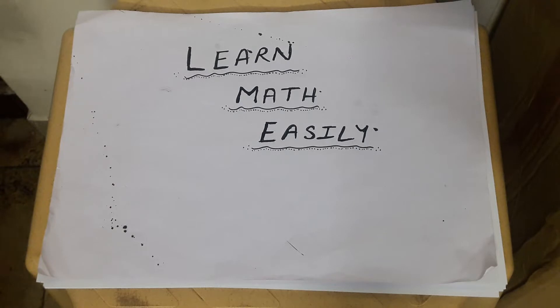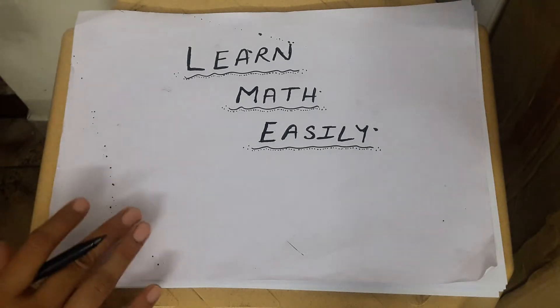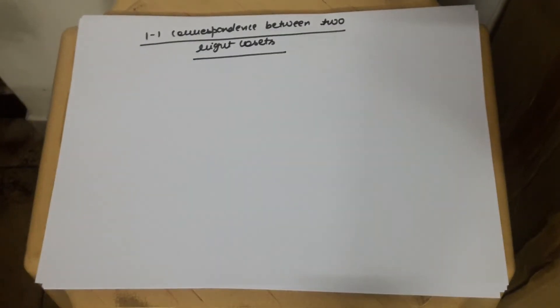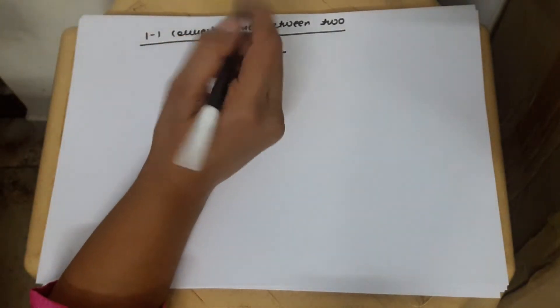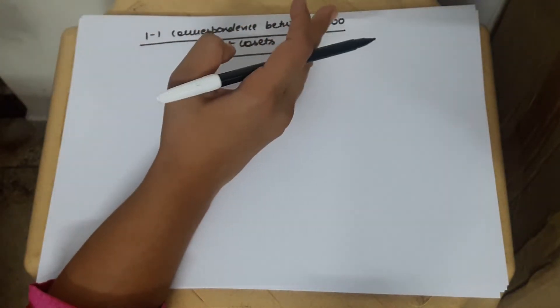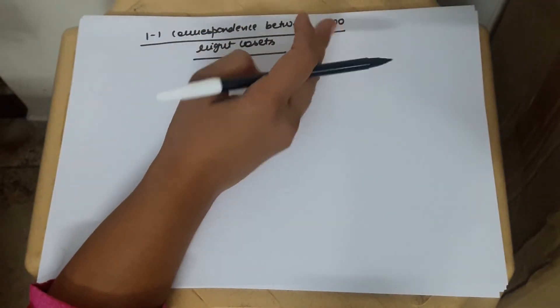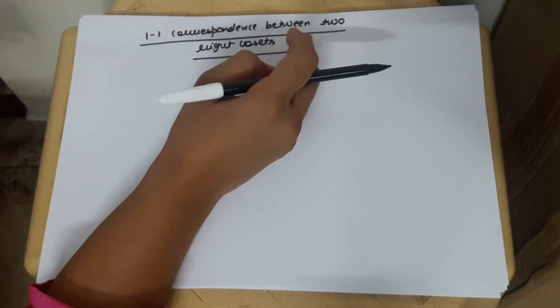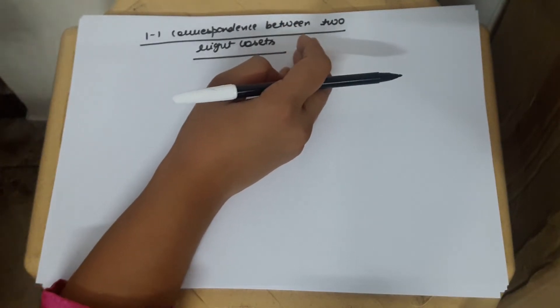In today's video, I am going to prove one of the very important theorems of the topic cosets, which states that there is a one-to-one correspondence between two right cosets.